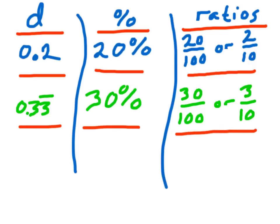Now we can also talk about accuracy. This decimal here — no matter how much you type it in, you're always cutting it off, so you're losing some accuracy and precision. But 30% is almost like telling the calculator we are talking about a ratio or a fraction, which is not estimated — that is exact. As soon as I try to turn this ratio, this fraction, into a decimal, I have sacrificed some accuracy.